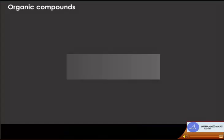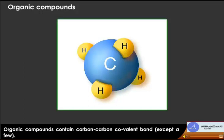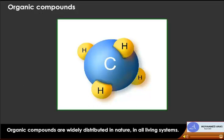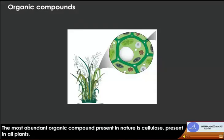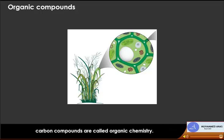Organic chemistry is a branch of chemistry which deals with compounds of carbon, except oxides of carbon and carbonates and bicarbonates of metals. Hydrocarbons and their derivatives are called organic compounds. Organic compounds contain carbon-carbon covalent bonds and are widely distributed in nature in all living systems. The most abundant organic compound in nature is cellulose, present in all plants. The branch of chemistry dealing with carbon compounds is called organic chemistry.